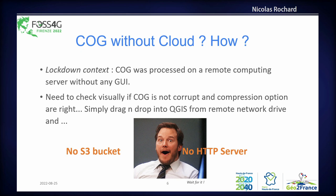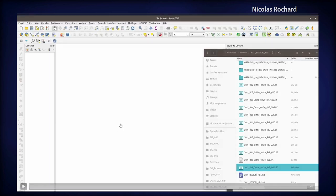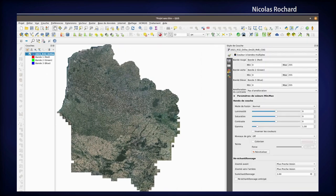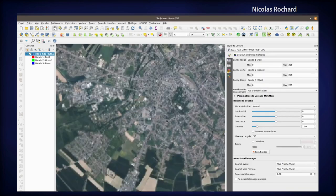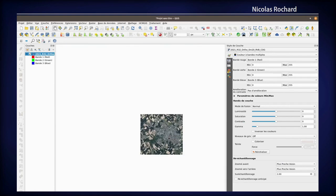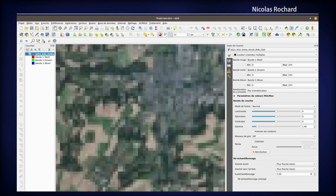During lockdown we wanted to do some benchmarks. The only way to generate COGs was to process on a remote computing server without any graphical interface. After processing, we needed to check for corruption and review all the compression options available. I just tried to drag and drop from QGIS from my remote network drive and didn't expect it to be as efficient as it was. The files were 250 gigabytes.